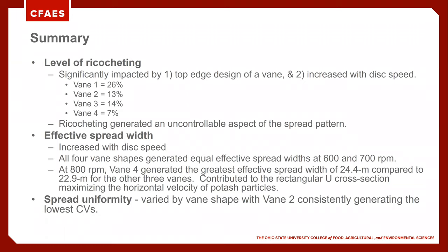What did we learn? Ricocheting was a concern, and we were able to document this in our stationary test. Ricocheting was significantly impacted by the top edge of the vein design, and it increased with disc speed — more ricocheting occurred at 800 RPM versus 600. On average, vein one generated about 26% ricocheted material. Veins two and three were similar at 13% and 14%, and vein four was the least at 7%. So 26% for vein one meant that 26% of the flow off the conveyor was ricocheted or uncontrolled flow off those veins.